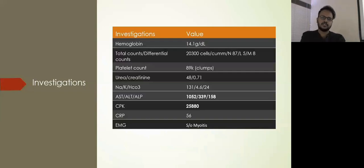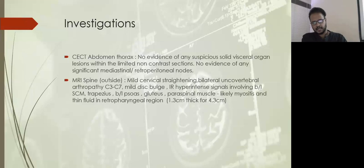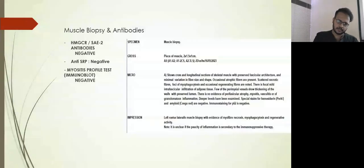His EMG and nerve conduction studies showed features suggestive of myositis. Outside, he had done an MRI spine showing features suggestive of myositis. We did a CECT abdomen thorax as part of screening for any malignancy prior to initiation of immunosuppressive therapy. No evidence of any suspicious solid visceral organ lesions was seen. We went ahead with muscle biopsy and sent antibodies for myositis. Both HMGCR and anti-SRP were negative. Myositis profile was also negative.